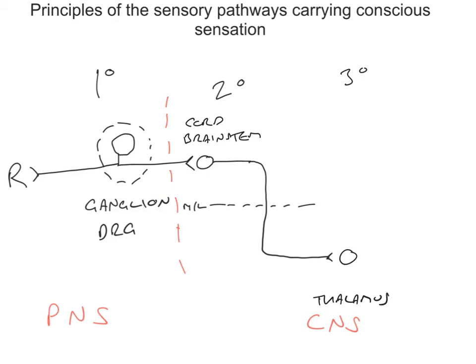It is the third order neurons which ultimately project up to the cerebral cortex. It is in the somatosensory cortex and other parts of the cortex where conscious perception of sensation occurs — via a process which, at the moment, is completely mysterious to us. We don't understand this conscious perception at all.